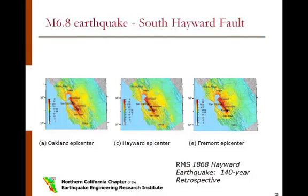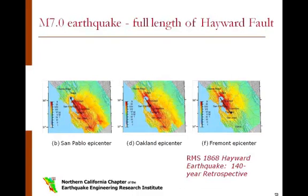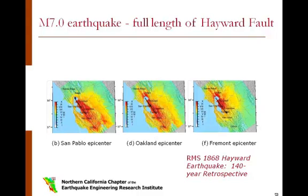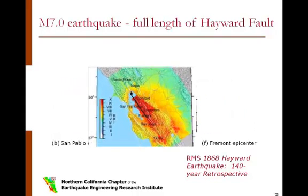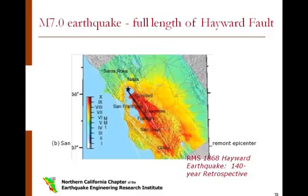Each earthquake has a different epicenter along the fault. This figure illustrates expected ground shaking of the magnitude 6.8 earthquake along the south Hayward Fault, with an Oakland epicenter on the left, a Hayward epicenter in the center, and a Fremont epicenter on the right. These figures illustrate the magnitude 7.0 earthquake along the full length of the fault, with a San Pablo epicenter on the left, an Oakland epicenter in the middle, and a Fremont epicenter on the right. The epicenter and magnitude that most closely match the 1995 scenario earthquake is the magnitude 7.0 earthquake on the full length of the Hayward Fault with the San Pablo epicenter.